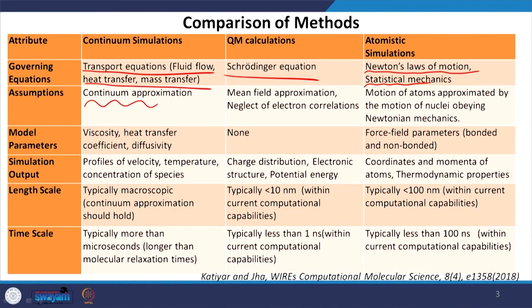The assumptions are very different across methods. Quantum chemistry has fewer assumptions, making it a first-principles method, whereas continuum simulations have many inherent assumptions — primarily the continuum assumption that molecules in a control volume give rise to average properties like density or velocity. In quantum mechanics a mean-field approximation is used during numerical solution of the Schrödinger equation. The exact solution of the Schrödinger equation is only possible for very small molecules like hydrogen; for more realistic systems we need numerical approximations, such as neglecting electron correlations.